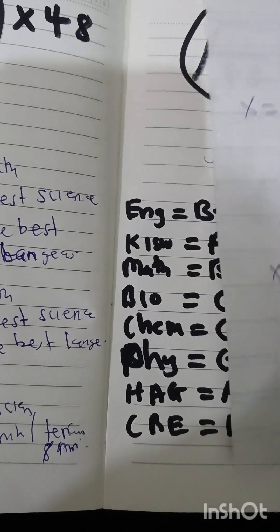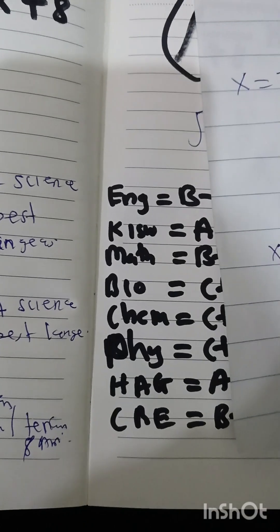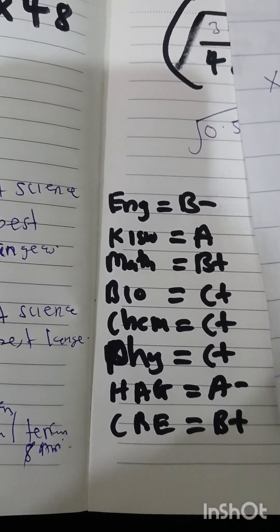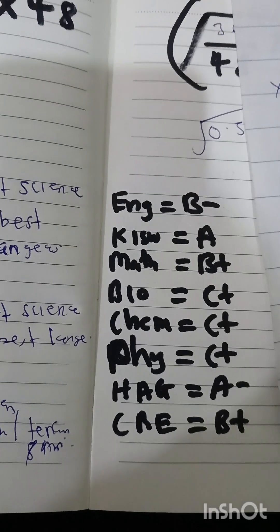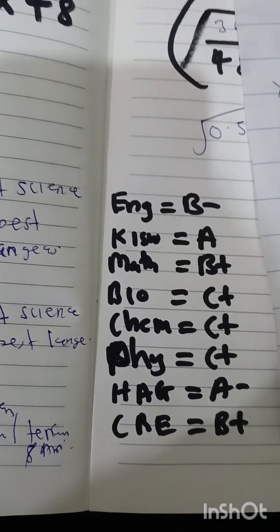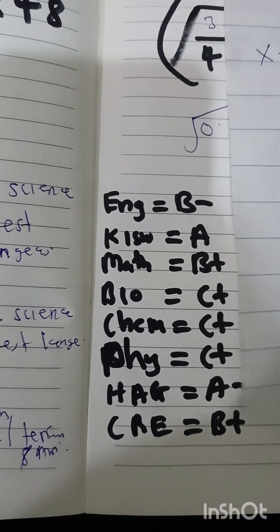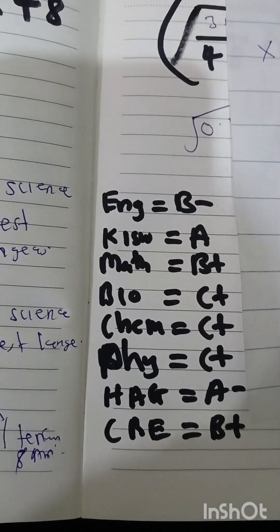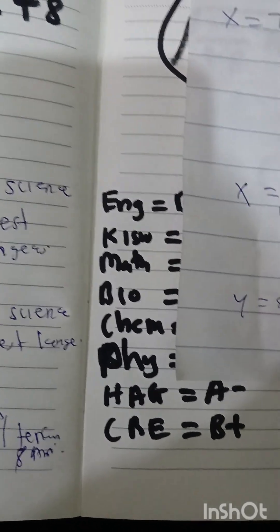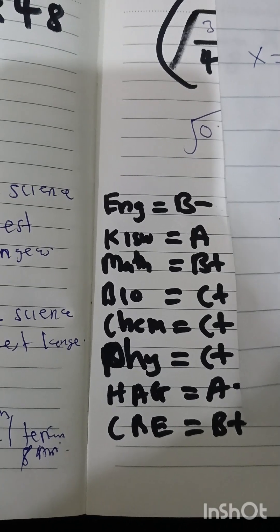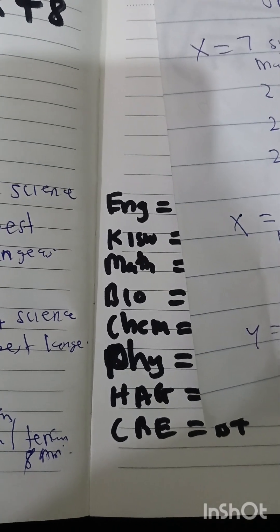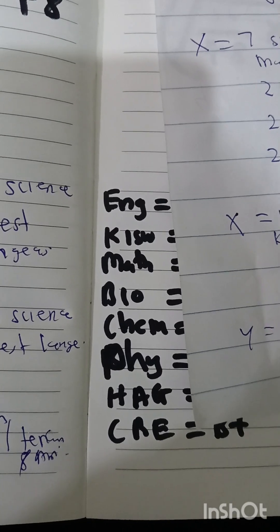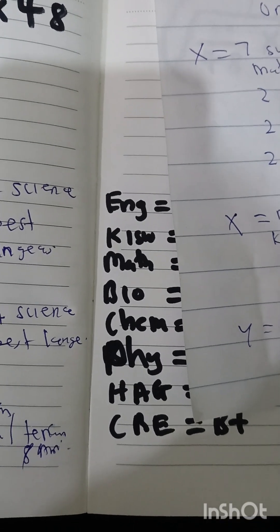Then for our y, we shall pick B minus English, which is equivalent to 8 points. You add Kiswahili, 12 points, add mathematics 10 points. Then we shall add two best sciences, let's say biology and chemistry, 14 points. Each has 7, so 7 by 2 is 14.